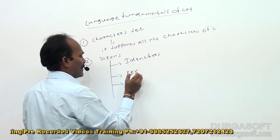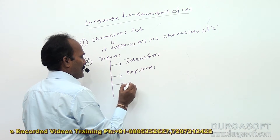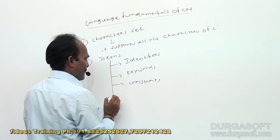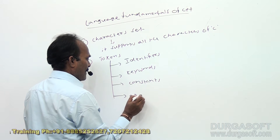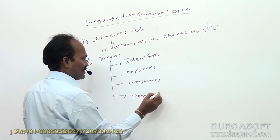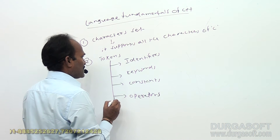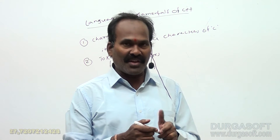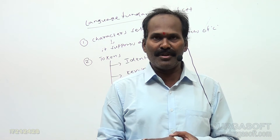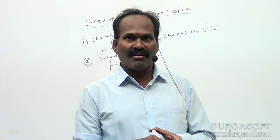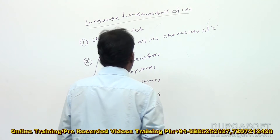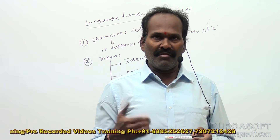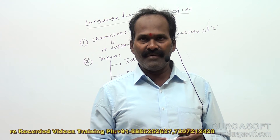The tokens are divided into these categories: first, identifiers; second, keywords; third, constants; and fourth, operators. Identifiers are something like user-defined names — user-given names for variables, methods, and functions. So an identifier is nothing but a user-defined name for a variable, a method, or a function.